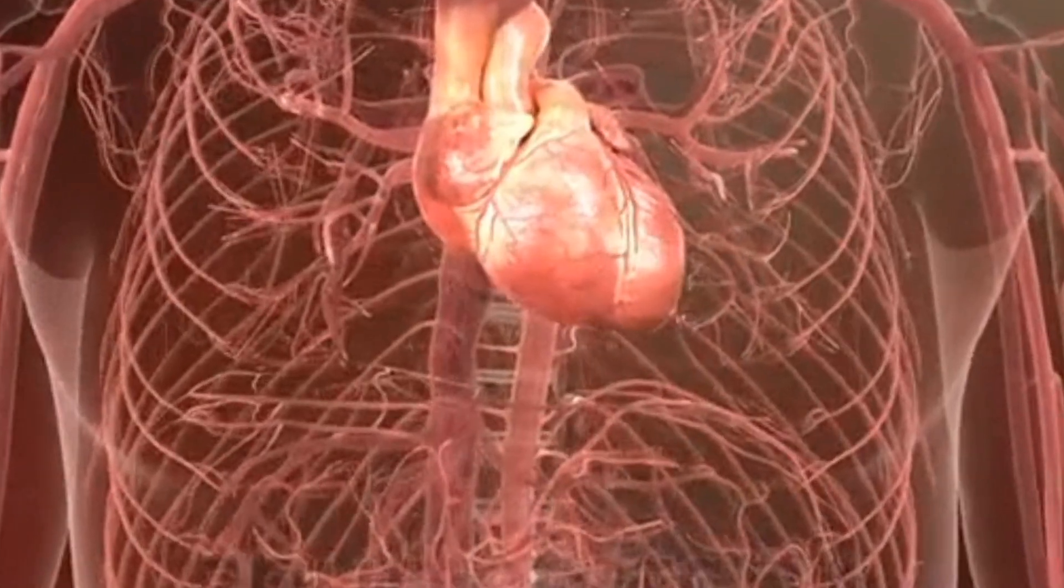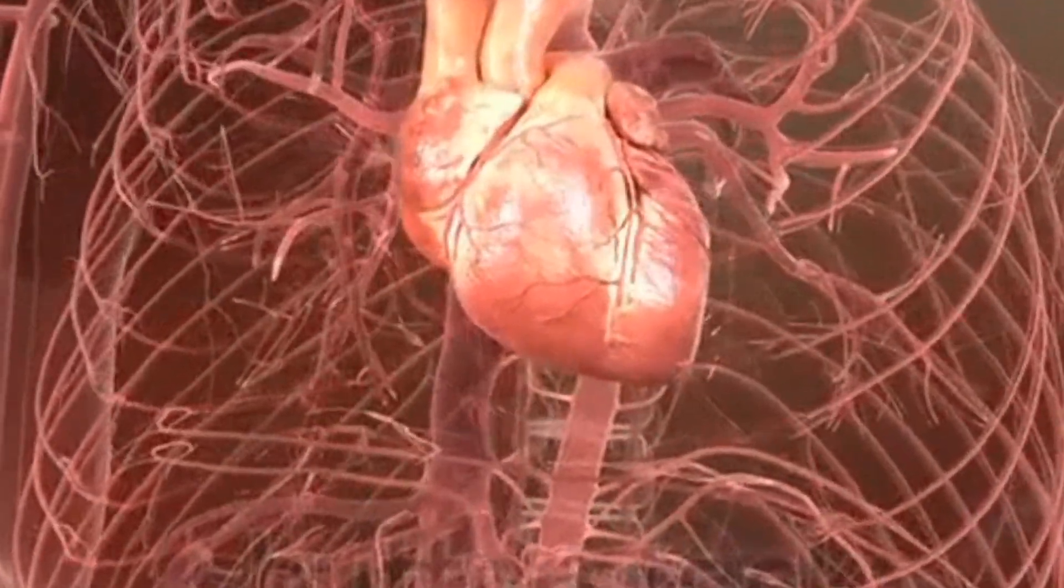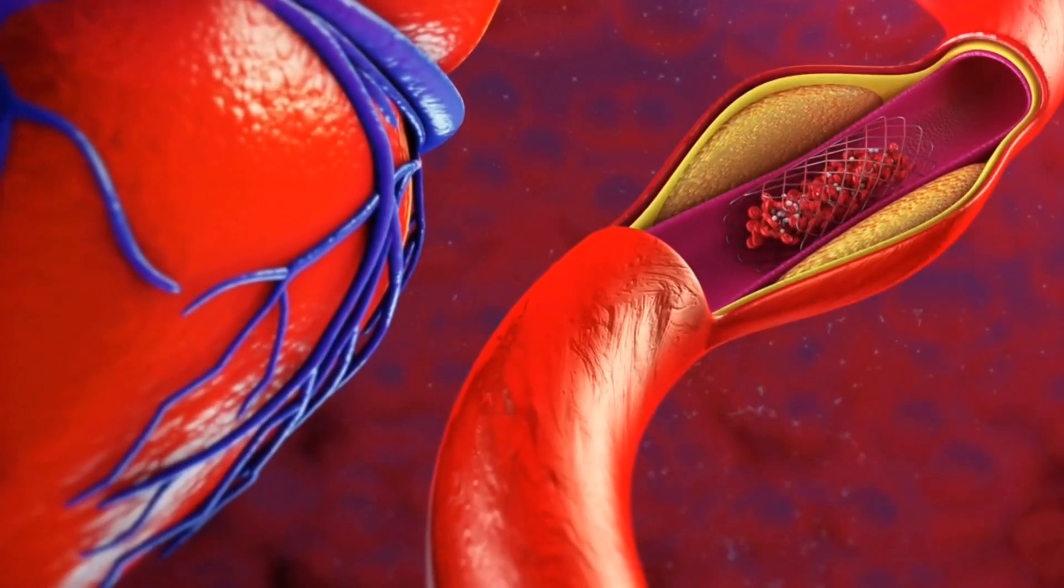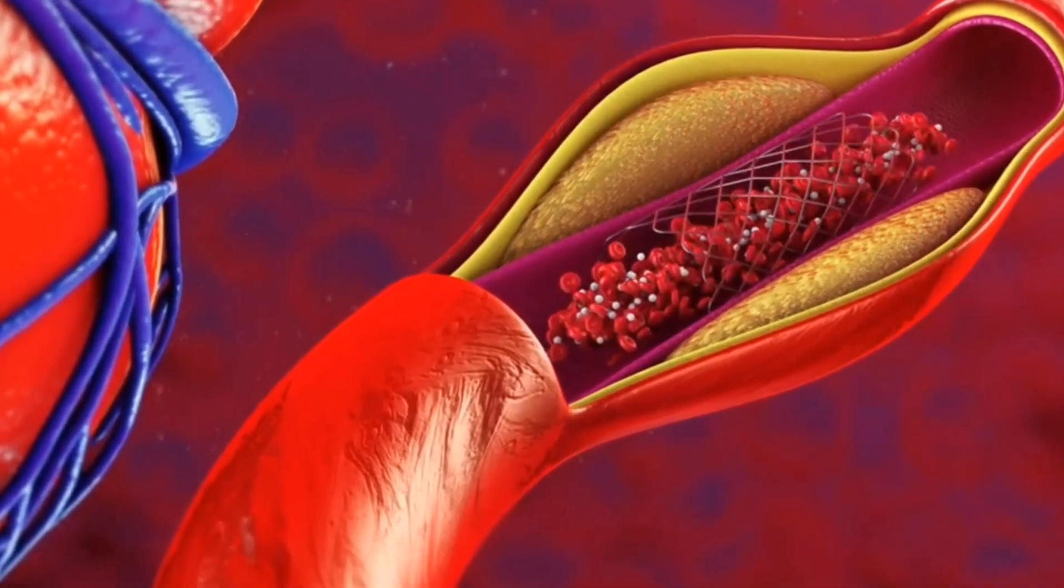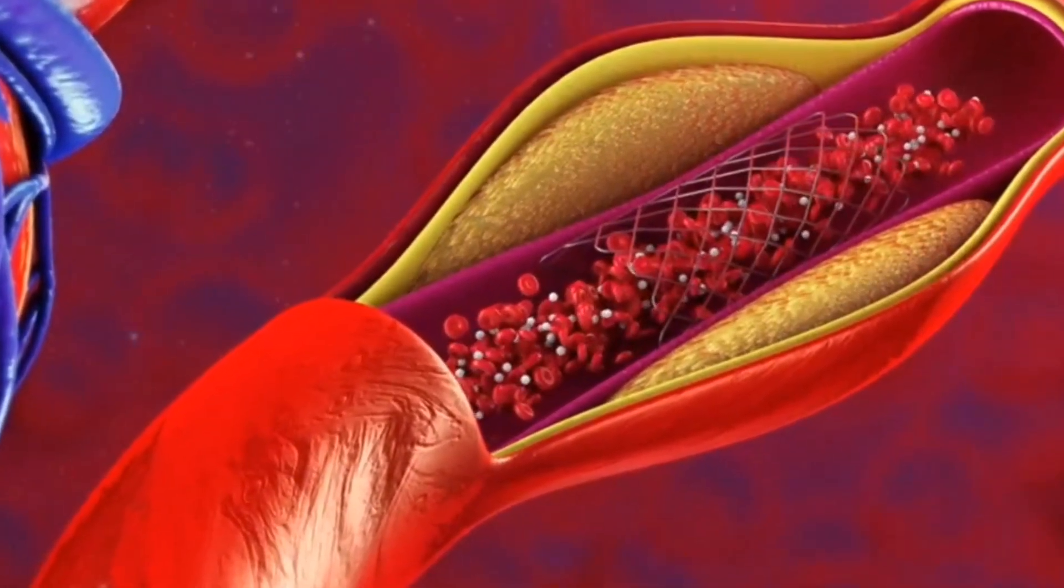Also called percutaneous transluminal coronary angioplasty, or balloon angioplasty, it is designed to restore the flow of blood through coronary arteries narrowed or clogged by atherosclerotic plaques or blood clots.